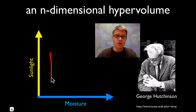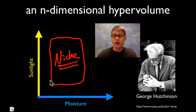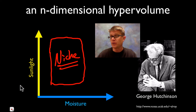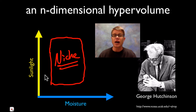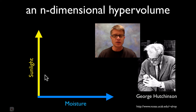Let's say you're an organism that likes a lot of light but doesn't do well with moisture — that area would be your niche. But there are so many different characteristics, both biotic and abiotic — temperature, food, predators, and more. If you think of each of those as a different dimension, you would have this complex n-dimensional hypervolume: a shape that only one species can fill, with no two species overlapping.